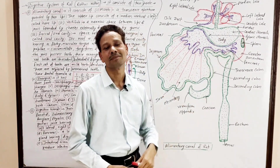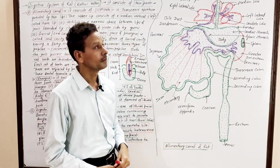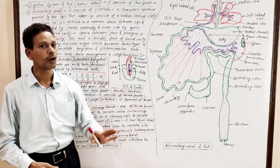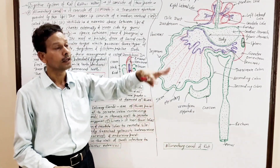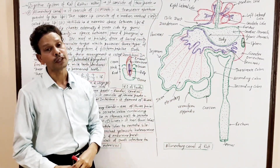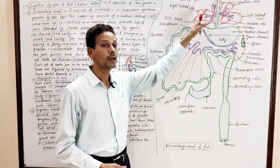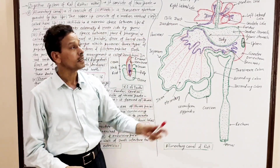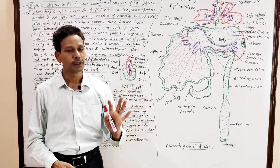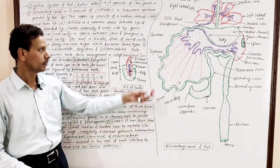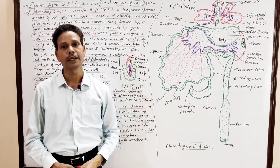The small intestine is the main seat of digestion and absorption of food. In the stomach, mechanical and chemical breakdown of food takes place. This is all about the digestive system of Rattus rattus — divided into the alimentary canal and digestive glands including salivary glands, liver, pancreas, gastric glands, and intestinal glands. In tomorrow's lecture, we will discuss the respiratory system of Rattus rattus.